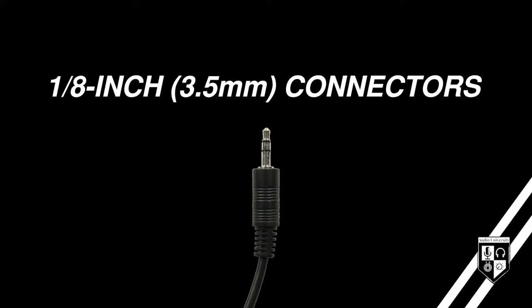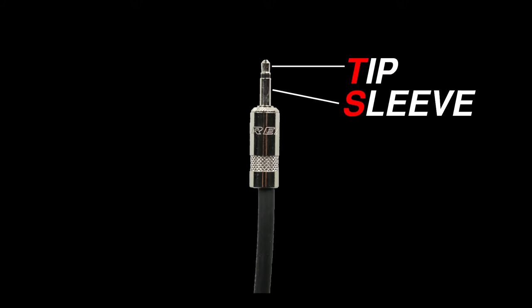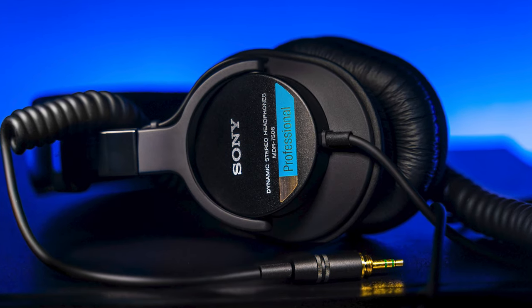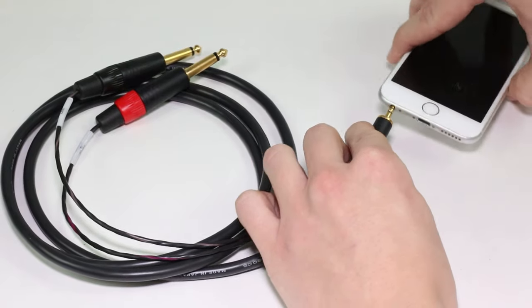The same principles that apply to quarter-inch connectors also apply to eighth-inch or 3.5 millimeter connectors. The number of channels and the type of signal that can be carried is determined by how many connection points are on the connector and the type of cable being used. A 3.5 millimeter TS connector contains two sections — a tip and a sleeve — and while not very common, you'll sometimes see them on consumer microphones. A 3.5 millimeter TRS connector contains three sections: a tip, a ring, and a sleeve. In most cases, a 3.5 millimeter TRS is used for a stereo signal, and they're often found on headphones, auxiliary inputs, and line outputs from consumer devices. It's really important to understand that a stereo TRS carrying a left and right signal is always an unbalanced connection.